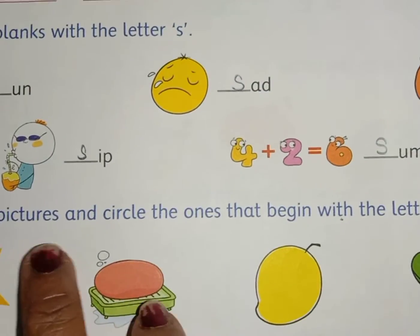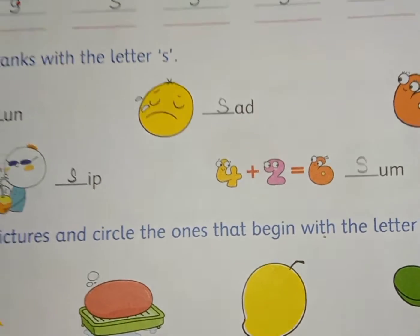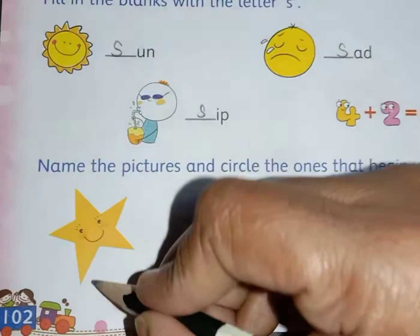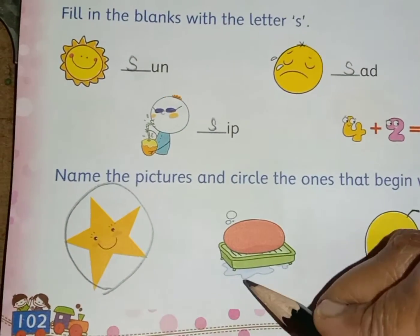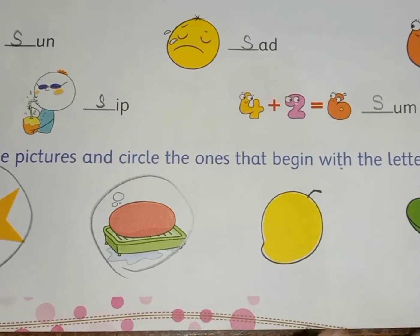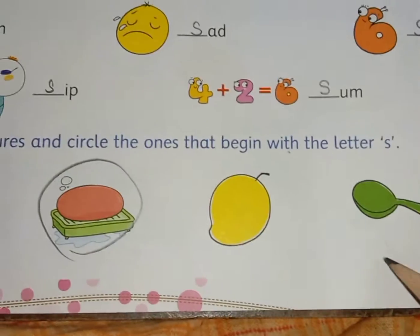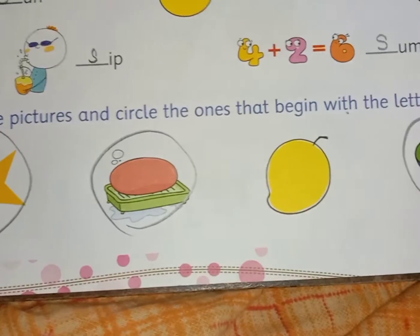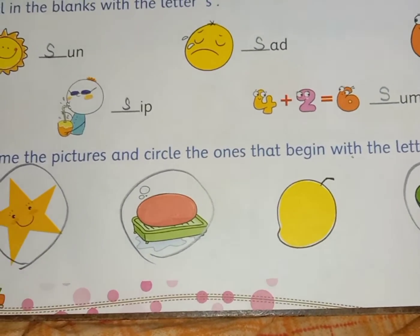Then name the pictures and circle the one that begins with the letter S. So children, let's start. S for star. S for soap. This is M for mango, so we will not circle it. And this one is S for spoon. So S for star, S for soap, and S for spoon.